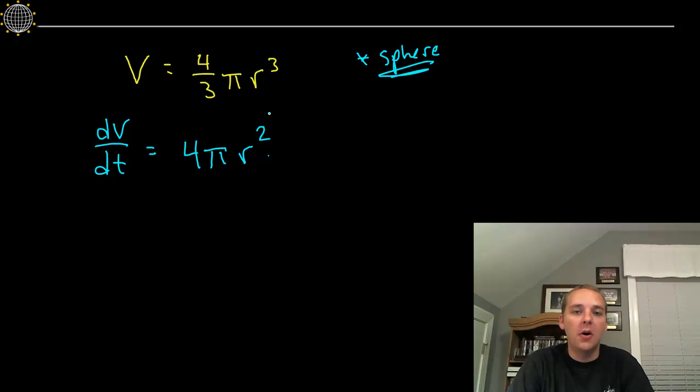And then because this is an r, not a t, we'd follow that with, you could kind of think of it as the chain rule, the derivative of r with respect to t.